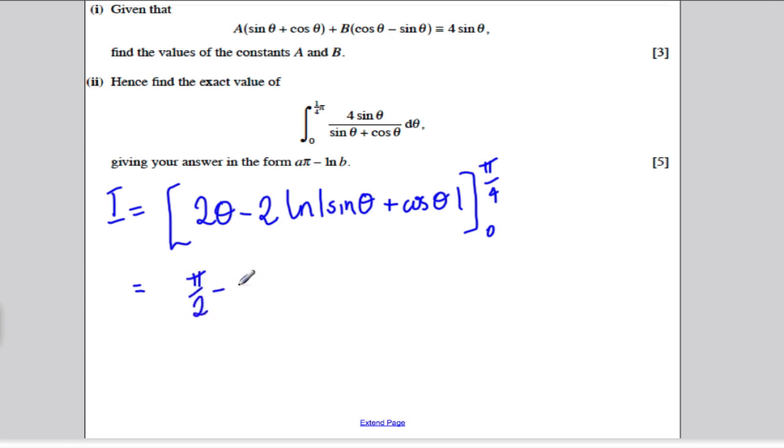subtract 2, ln. If I put pi by 4 into sine theta, I get root 2 over 2. And if I put it into cos theta, I get root 2 over 2. So, all in all, I get ln root 2.